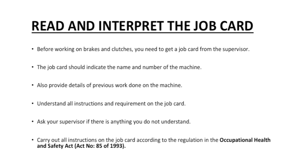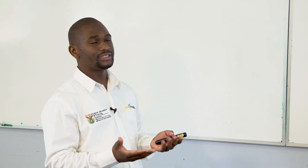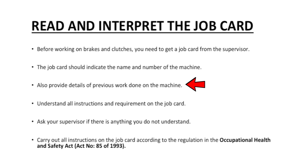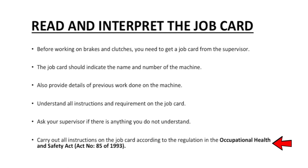Read and interpret the job card. Before working on brakes and clutches, you need to get a job card from the supervisor. The job card should indicate the name and number of the machine that you will be doing that particular maintenance on. It also provides details of previous work done on the machine. Understand all instructions and requirements on the job card, and ask your supervisor if there is anything you do not understand. Carry out all instructions on the job card according to the regulations in the Occupational Health and Safety Act 85 of 1993.